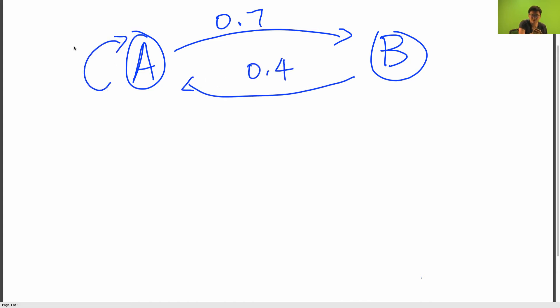So suppose I have the following Markov chain with two states, A and B. A goes to B with probability 0.7. B goes to A with probability 0.4. A self-loops with probability 0.3, and B has a self-loop with probability 0.6.